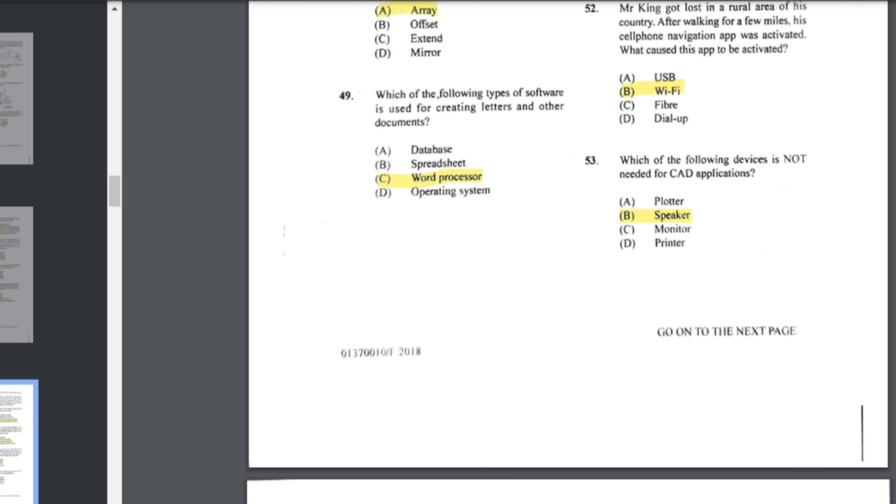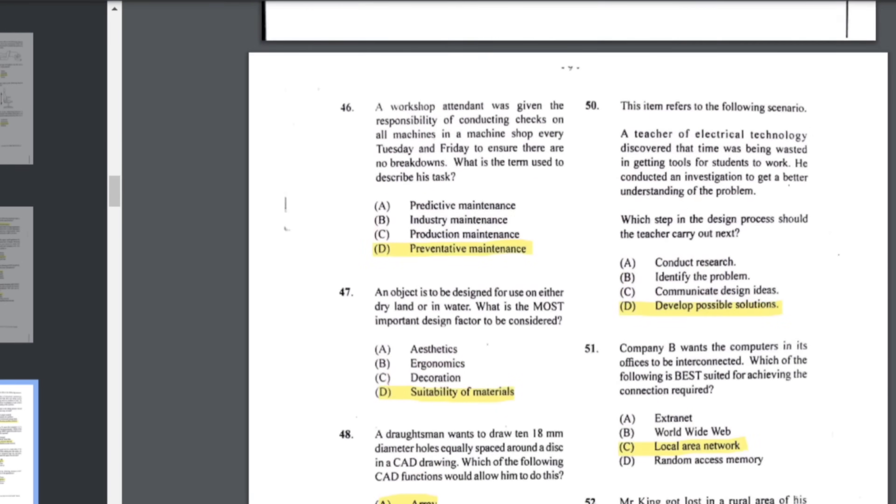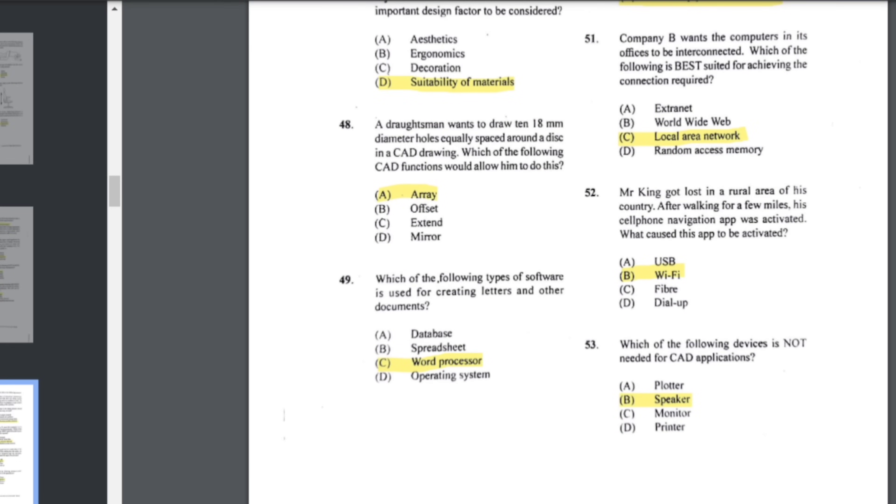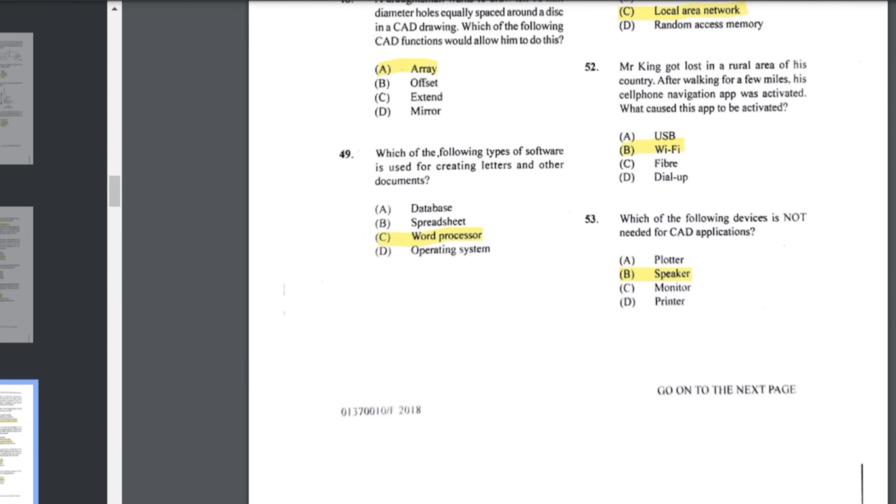Number 48: a draftsman wants to draw 10 18-millimeter diameter holes equally spaced around a disk in a CAD drawing. Which of the following CAD functions would you use? This would be the array command. Number 49: which of the following types of software is used for creating letters and other documents? This would be a word processor such as Microsoft Word. Number 50: a teacher of electrical technology discovered that time was being wasted in getting tools for students to work. He conducted an investigation to get a better understanding of the problem. Which step in the design process should the teacher carry out next? Develop possible solutions.